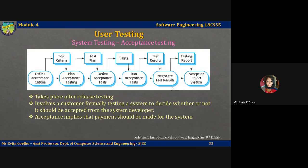The next phase is negotiate test results. It's very unlikely that all defined acceptance tests will pass with no problems. If they do, the acceptance testing is complete and the system can be handed over. More commonly, there will be problems discovered, and in such cases the developer and the customer will need to negotiate to decide if the system is good enough for deployment or whether some modifications need to be made to resolve the identified problems.